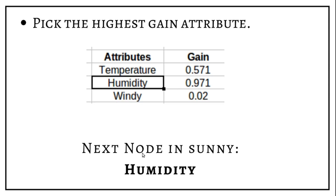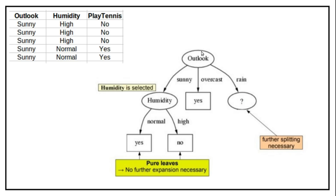So the next node under sunny will be humidity. For humidity normal, all values are yes — so write yes directly. For humidity high, all three values are no — so write no directly. These are pure leaf nodes and we don't need any further expansion. But the rainy branch still requires further splitting.